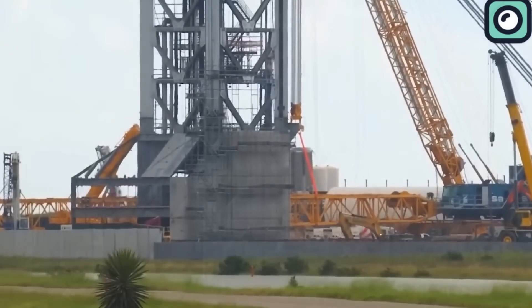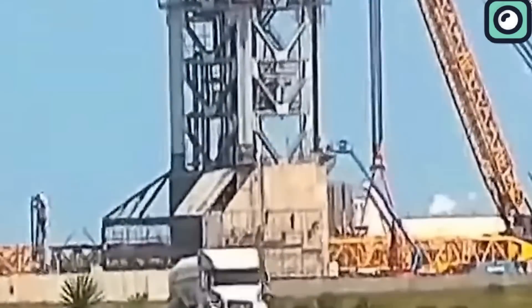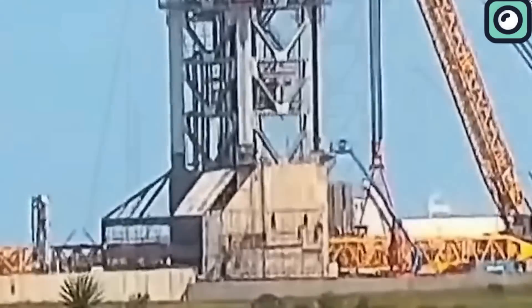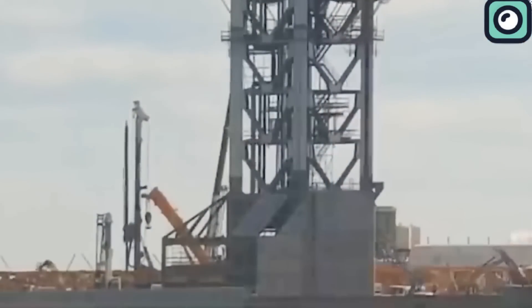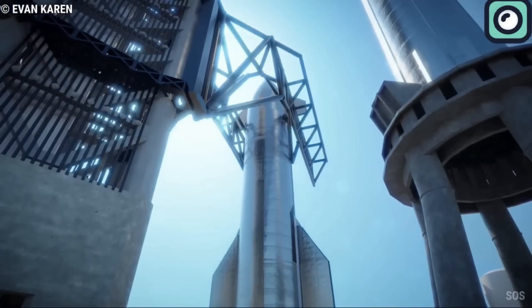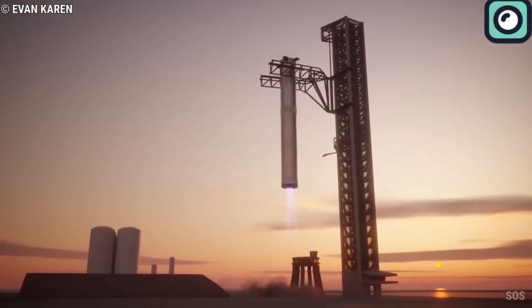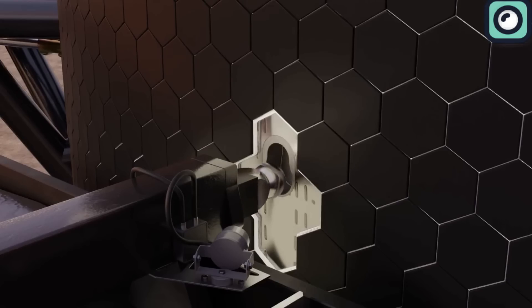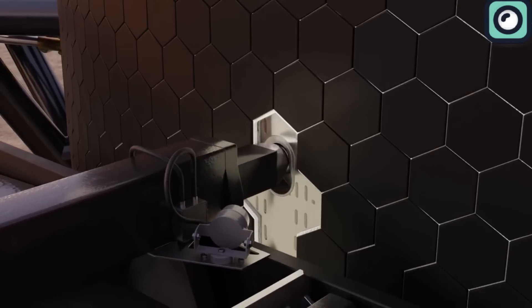These arms also play a unique role in attempting to catch the booster upon descent, aiming to make SpaceX's launch system fully reusable. One of the most notable innovations on this launch pad is the quick disconnect arm, which supplies fuel to the Starship while it's on the pad and disengages just before launch.